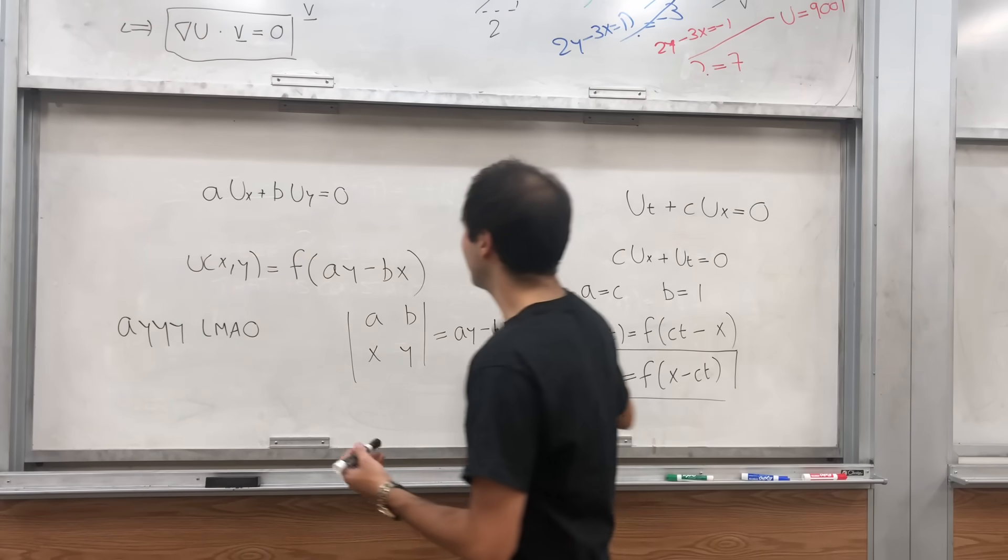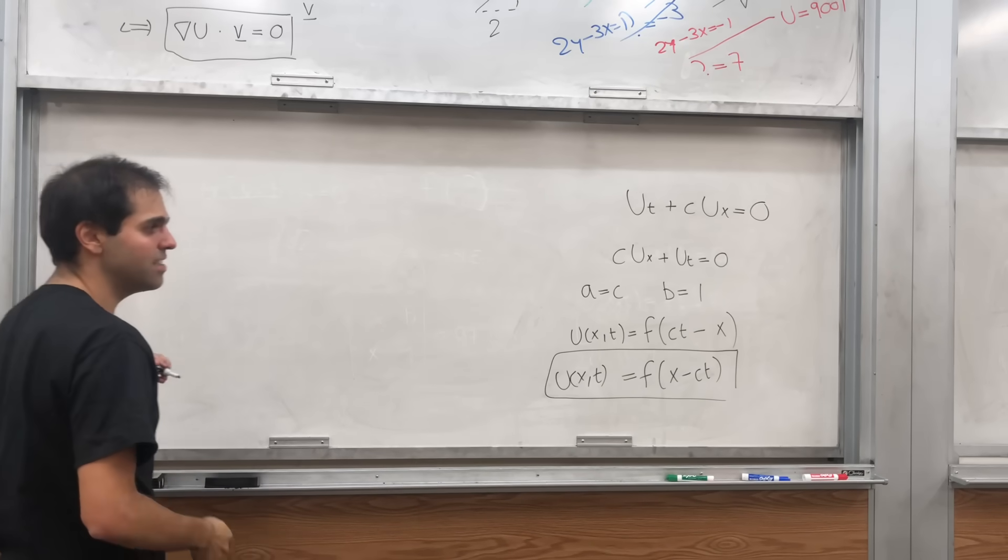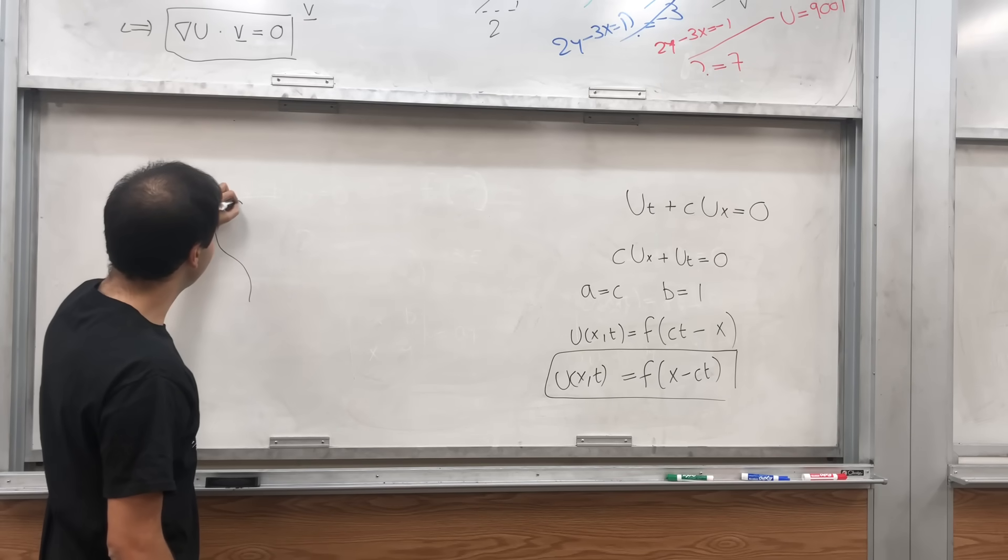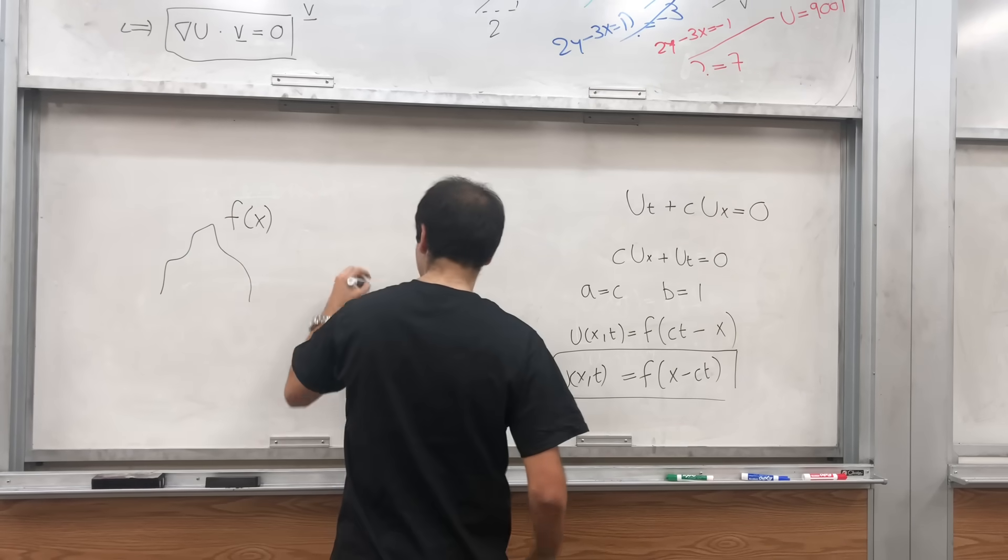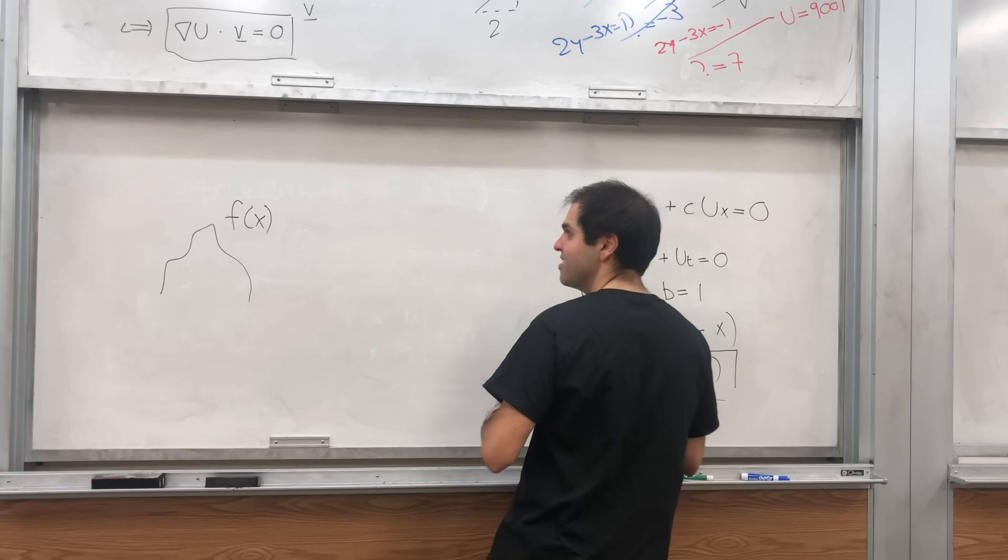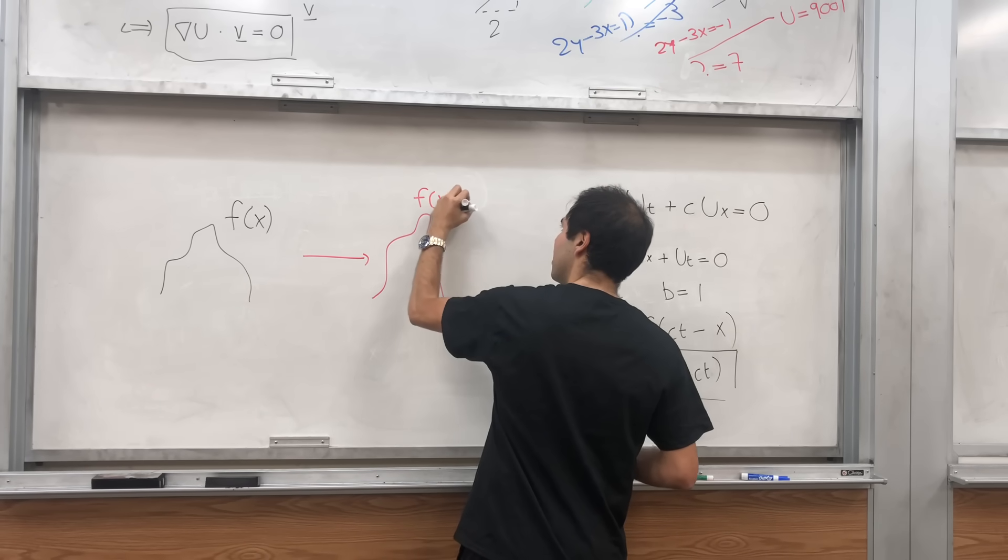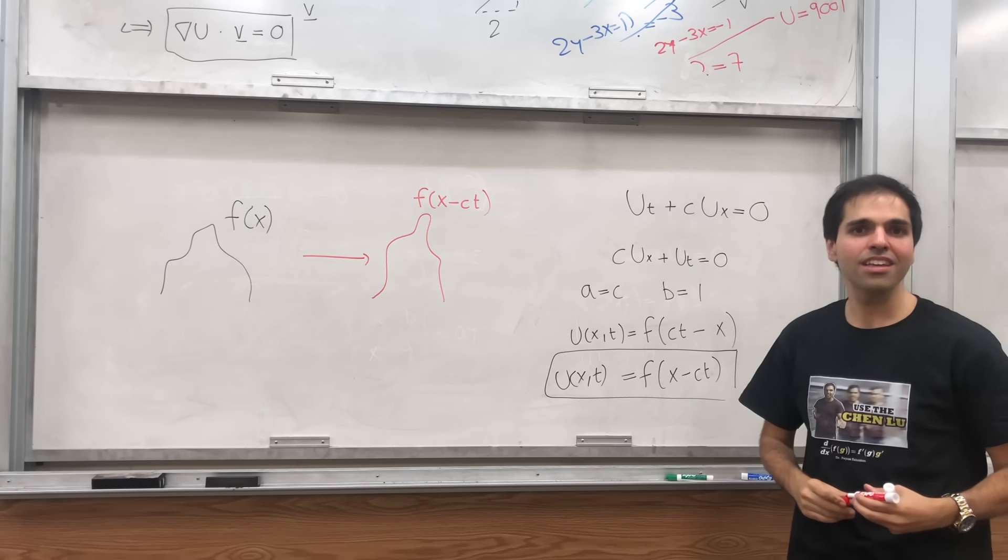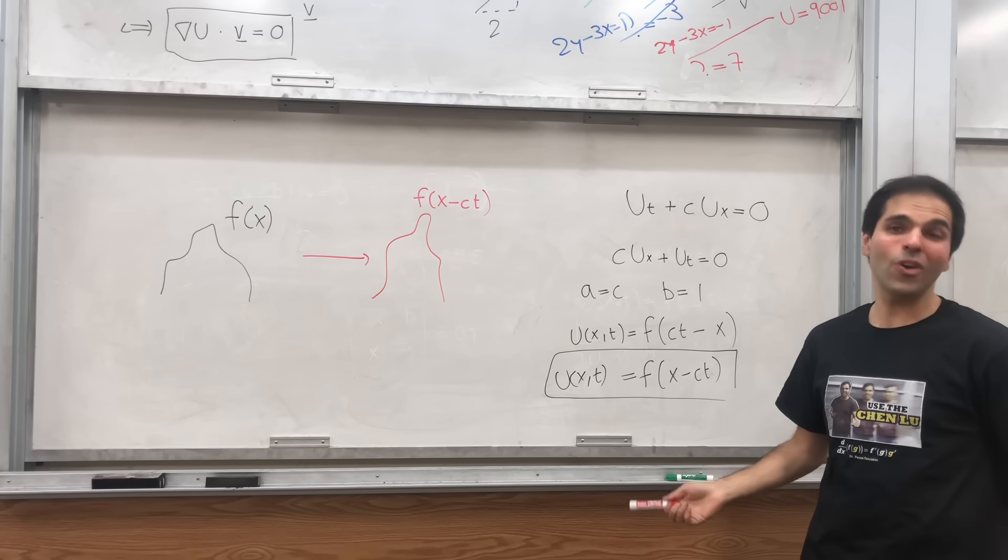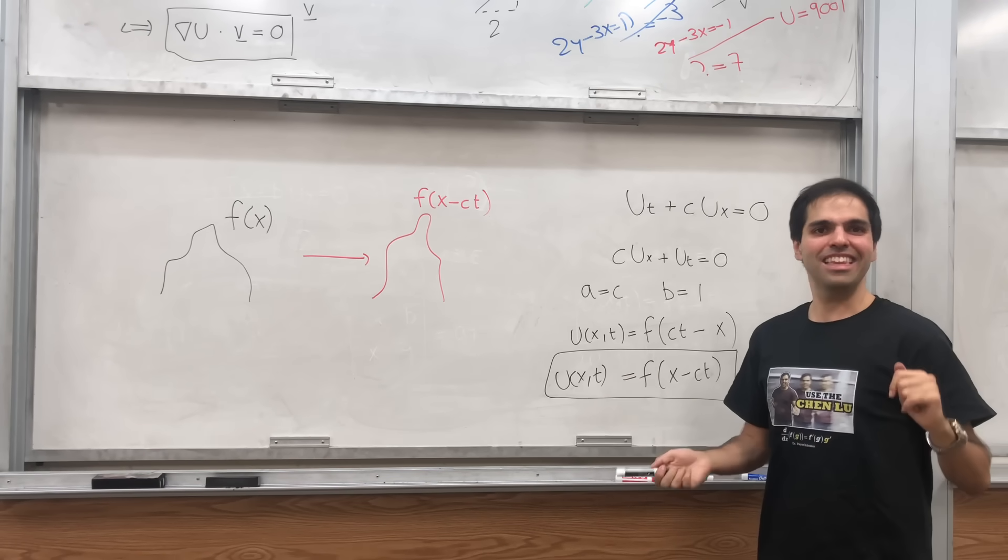Because how does the graph of f of x minus ct compare to the graph of f? Well, if this is the graph of f of x, f of x minus ct literally looks like the same graph. But you shift it to the right. Shift it to the right by ct units. So, you can think of it as sort of this f, this profile just traveling to the right at a speed c. Or, you could say f gets transported to the right at speed c. Just like that named transport equation.